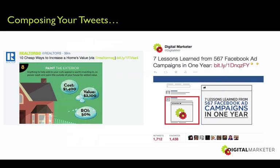Here are a few more examples. The one on the left, which we saw in lesson two, goes to a piece of content with an infographic: '10 Cheap Ways to Increase a Home's Value' — that is the headline of the post. Same thing on the right: 'Seven Lessons Learned from 567 Facebook Ad Campaigns in One Year' with an engaging image. Look at all the engagement on that tweet — they're distributing an ad that we paid for.